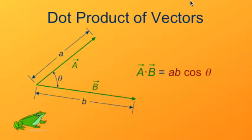So I've oriented these vectors so that they are tail to tail, and the angle between them I will call theta. The dot product, a dot b, is defined as the magnitude of a times the magnitude of b times the cosine of the angle between them.